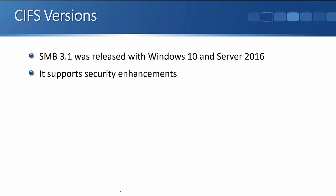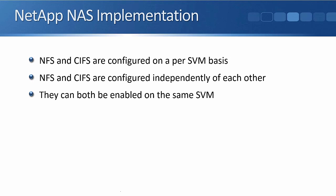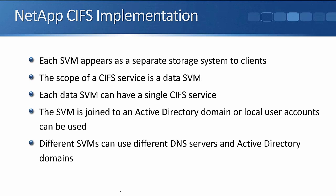SMB version 3.1 was released with Windows 10 and Windows Server 2016 and has security enhancements over previous versions. Now let's quickly review NAS implementation on NetApp. NFS and CIFS are configured on a per-SVM basis, independently of each other — they can be enabled on separate SVMs or on the same SVM. Each SVM appears as a separate storage system to clients, and the scope of a CIFS service is a data SVM.